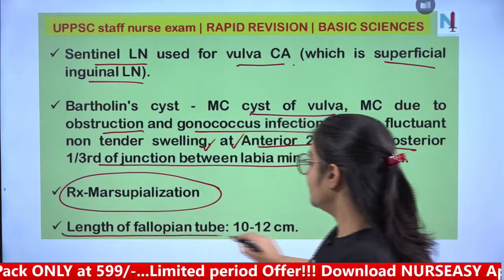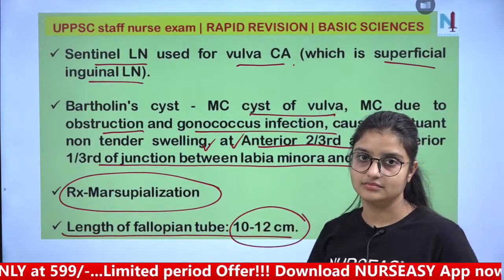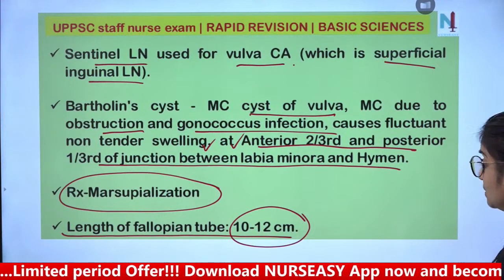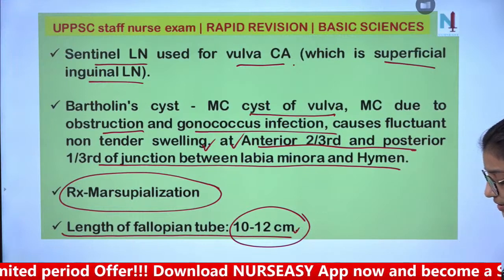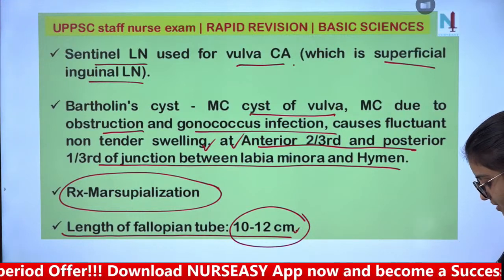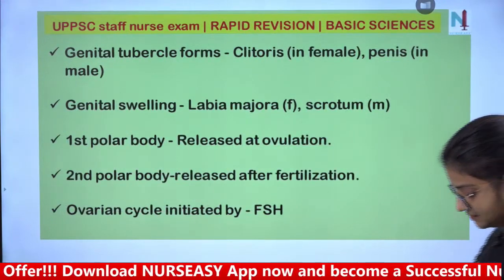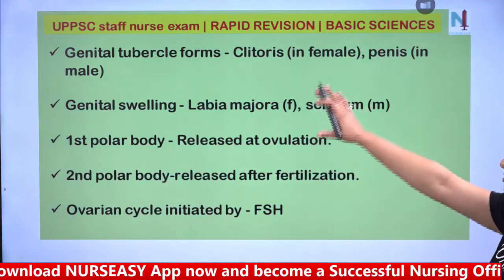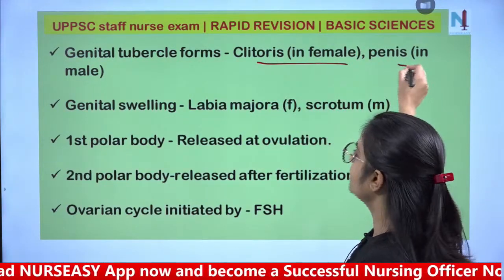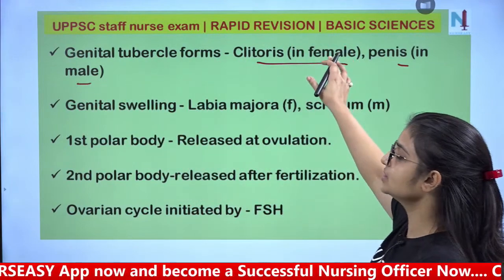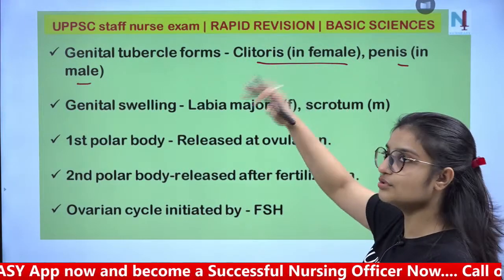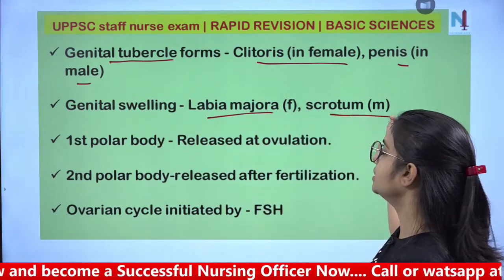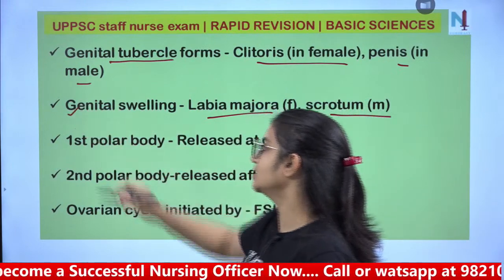The length of the fallopian tube is 10 to 12 cm, around 4 to 5 inches. Clitoris in female and penis in male are homologous structures, both arising from the genital tubercle. Labia majora and scrotum are also homologous and both originate from the genital swelling.